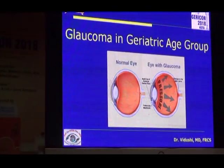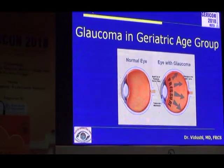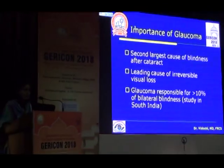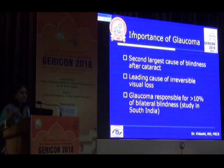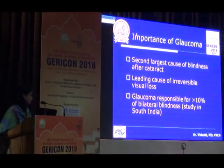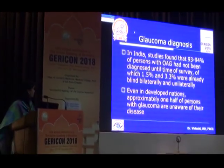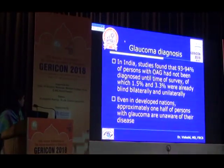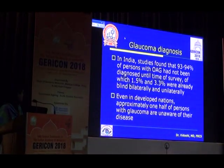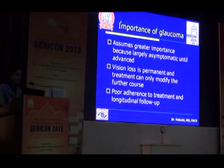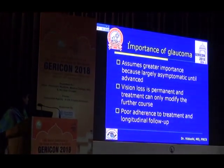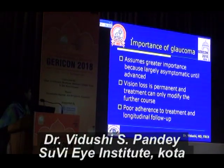The second big problem in this population is glaucoma, which essentially means that because of intraocular pressure and other reasons, there is damage to the optic nerve. Glaucoma is important because it is the second largest cause of blindness after cataract and the leading cause of irreversible visual loss — while cataract is taken care of by surgery, glaucoma causes irreversible visual loss and is responsible for more than 10% of bilateral blindness. Critically, 93–94% of people with open-angle glaucoma had not been diagnosed at the time of survey. Even in developed nations, approximately half of people with glaucoma are unaware of their disease because it is asymptomatic until a very late stage.